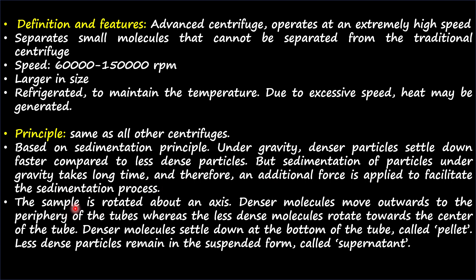The sample is rotated about an axis and the denser molecules move outwards to the periphery of the tubes, whereas the less dense molecules rotate towards the center. The denser molecules settle down at the bottom of the tube and that is called the pellet. The less dense particles remain in suspended form, and that is called the supernatant.